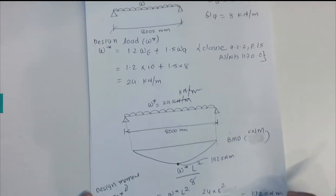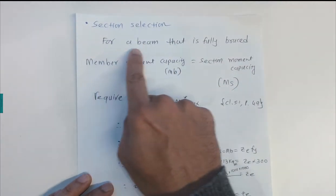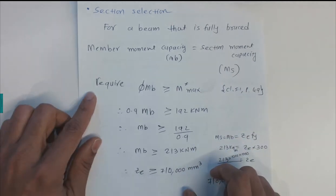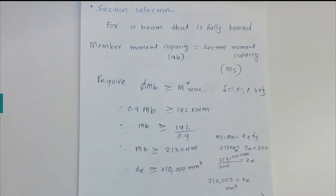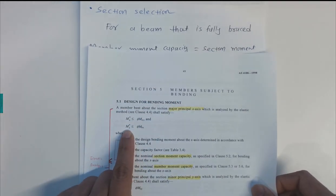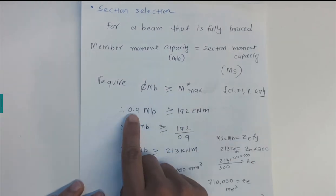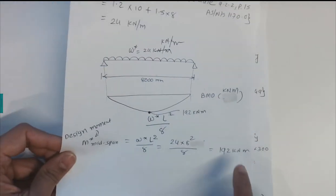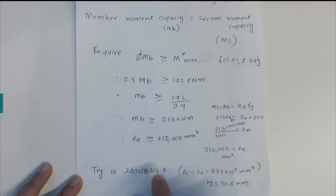For a fully braced member, the moment capacity Mb equals the section moment capacity Msx. The requirement from Clause 5.1, page 49, is that φMb must be greater than M*. So: 0.9 × Mb ≥ 192 kNm, which gives Mb ≥ 192 / 0.9 = 213 kilo-Newton-meters.